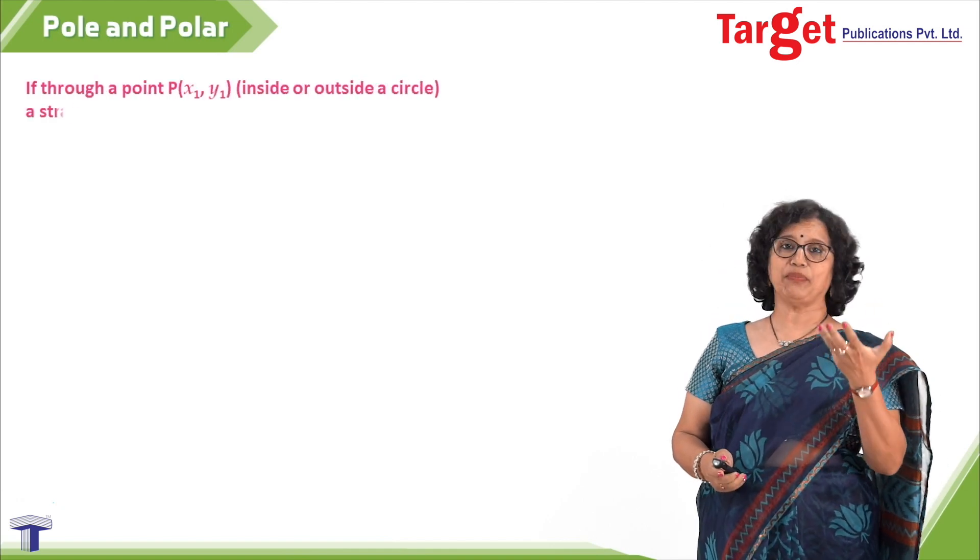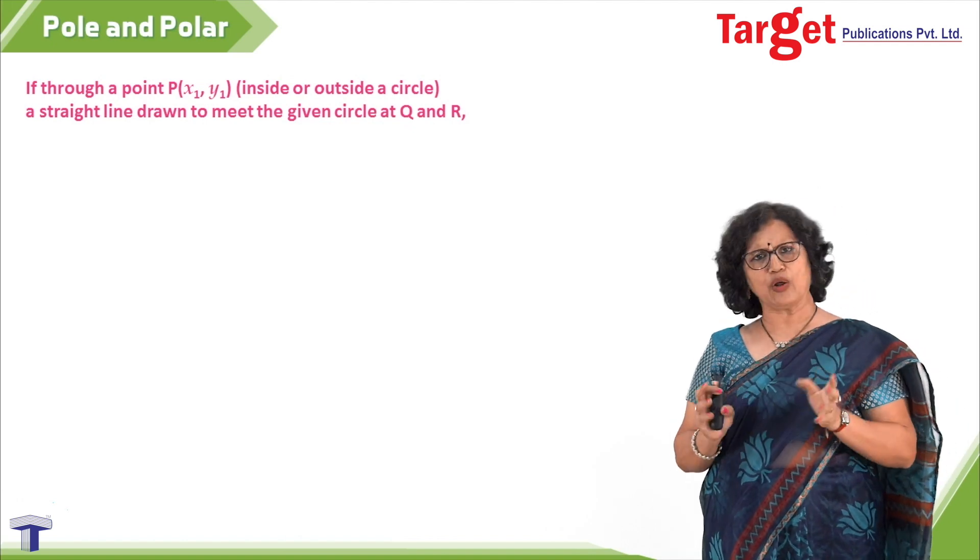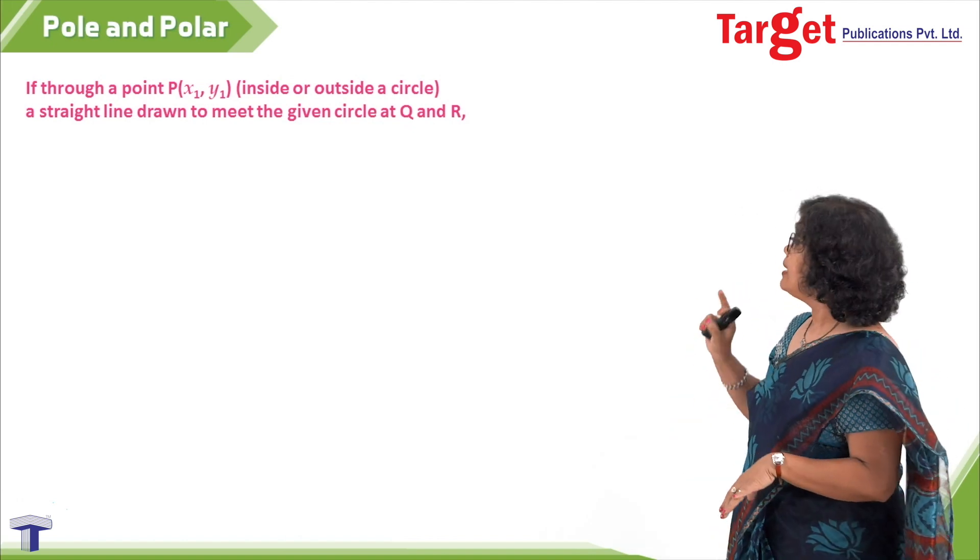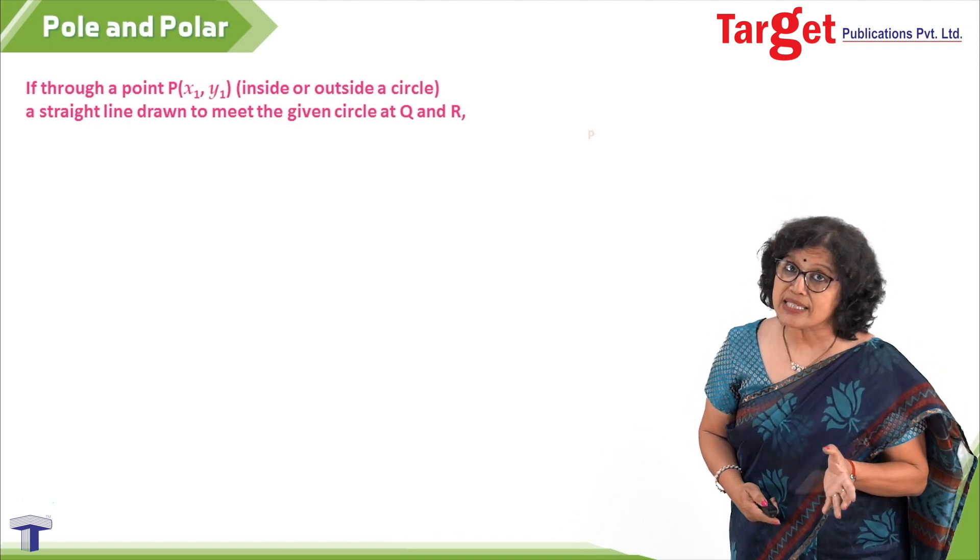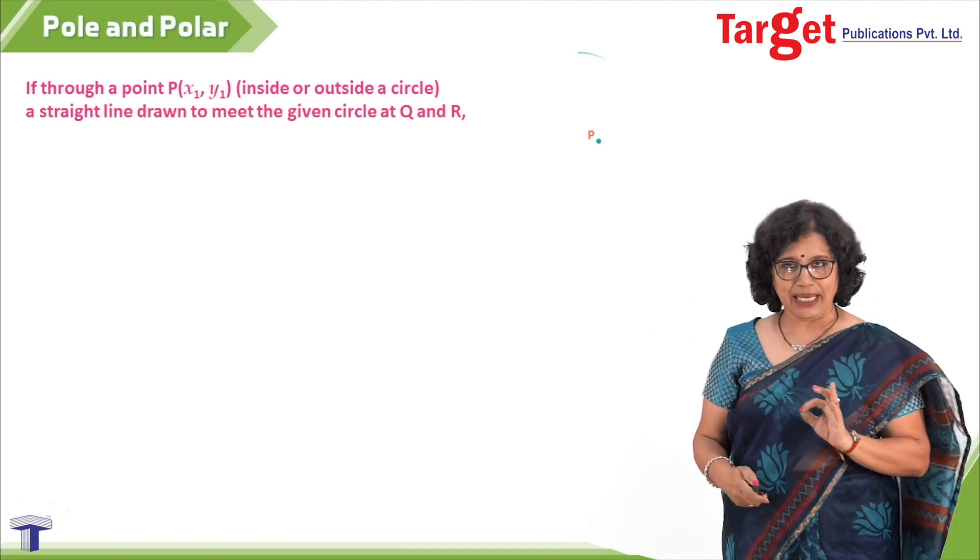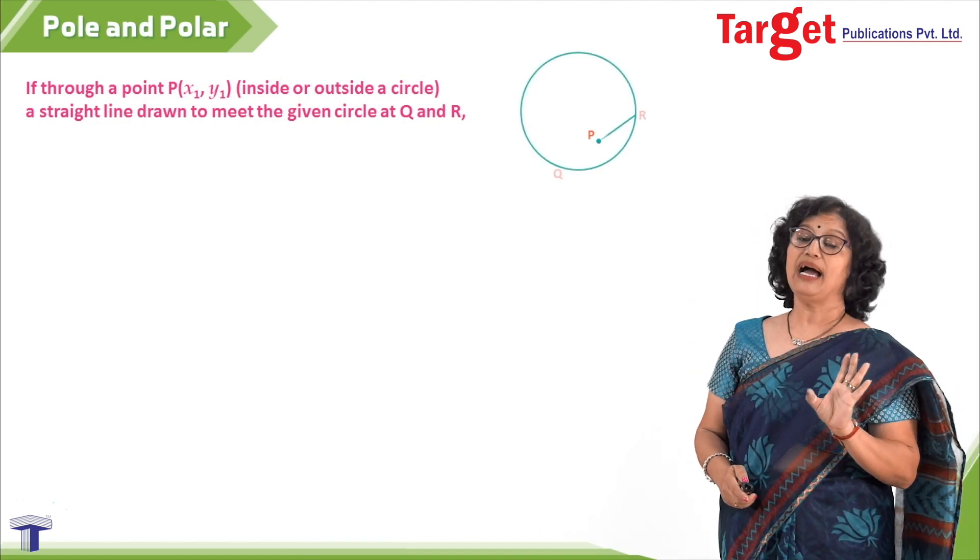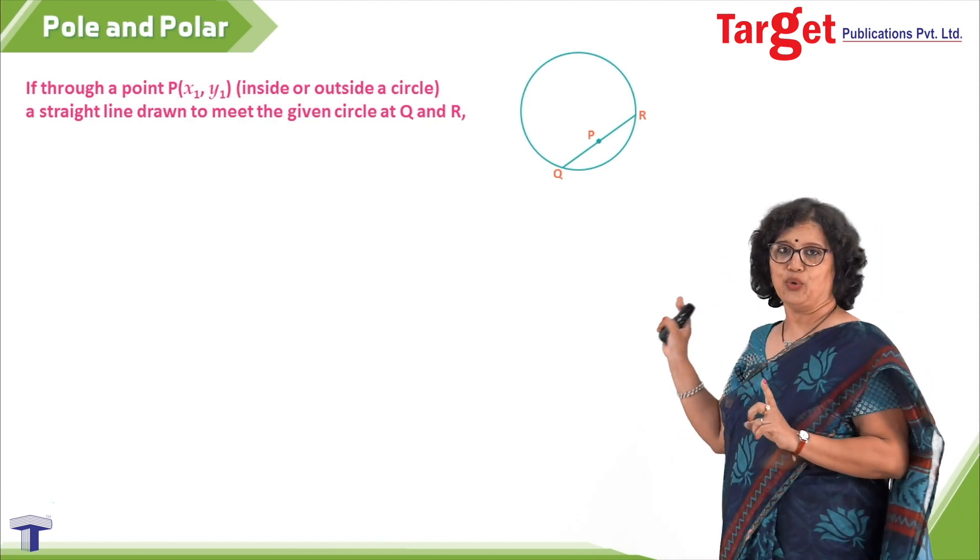Let us first define what I mean by polar. For that, I need a point P inside or outside a circle and a line is drawn through that point P which meets the circle at Q and R. So, I take a point P, draw a circle, and then through P I draw a line which meets the circle at Q and R.